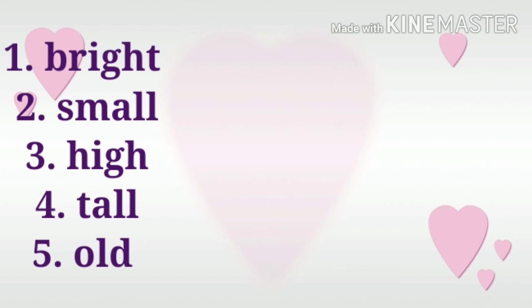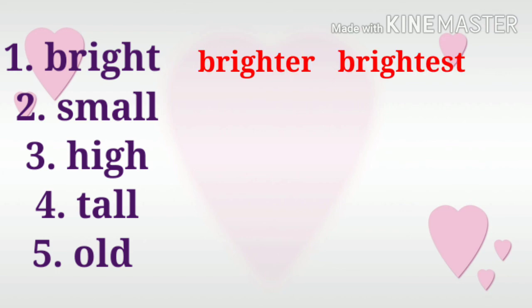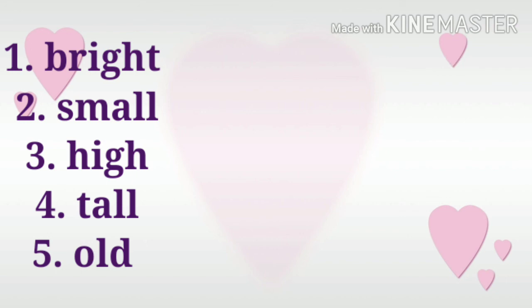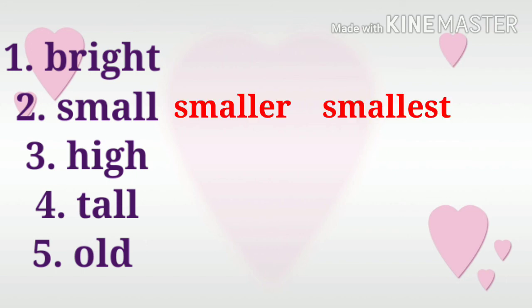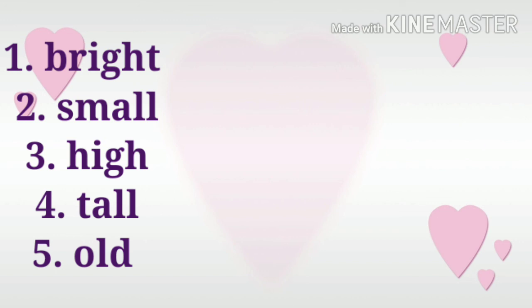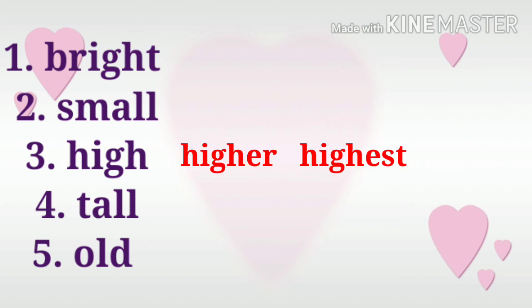Number one: bright. The comparative degree of bright is brighter. Then the superlative degree of the adjective bright is brightest. So: bright, brighter, brightest. Number two: small. The comparative degree of small is smaller, while in the superlative degree the word small becomes smallest. Number three: high. The comparative degree of high is higher, while in the superlative degree it becomes highest. So: high, higher, highest.